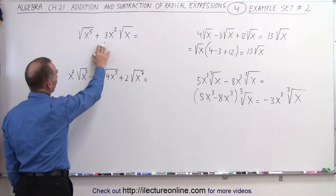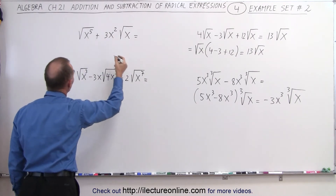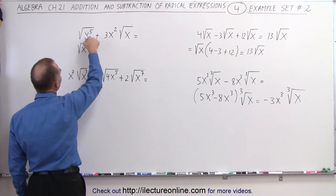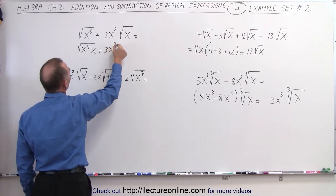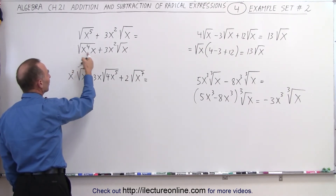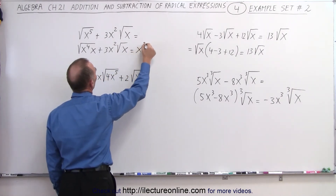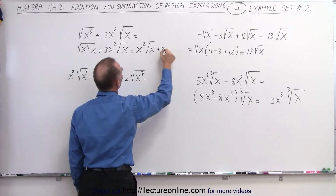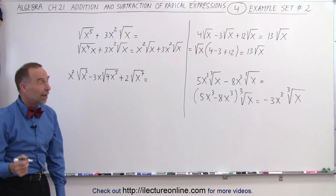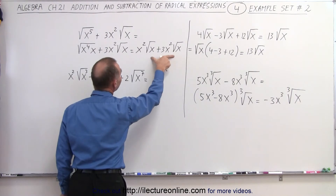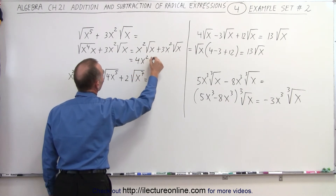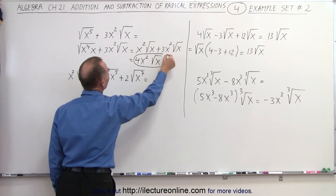Now here we have to do a little bit of extra work. Notice that they don't appear to be the same, but they can be rewritten. We can rewrite this as the square root of x to the 4th times x, because when you multiply you get back x to the 5th, plus 3x squared times the square root of x. The square root of x to the 4th is simply x squared, so this can be written as x squared times the square root of x, plus 3x squared times the square root of x. Now you can see what's underneath the radical is the same and they have the same index, so we combine them: x squared plus 3x squared equals 4x squared times the square root of x as the final simplified form.